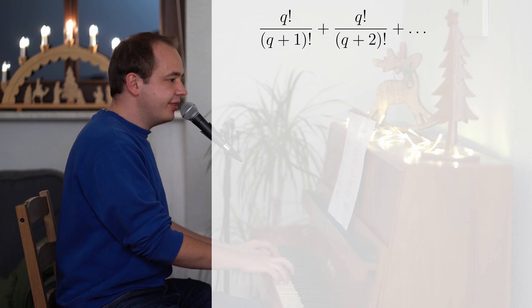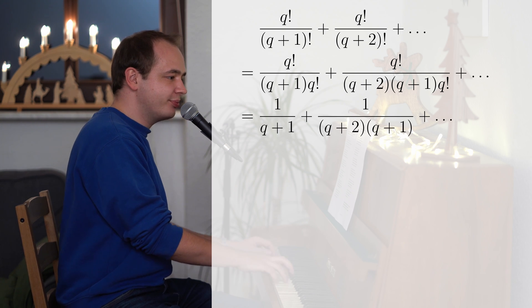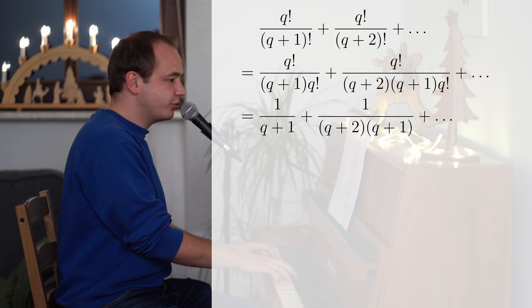And if we'd now take a look at the right hand side, we will again see factorials which we have to divide. Only this time the numerator factorial of q is contained in the denominator, which leaves you with 1 over a product. And there you can see this product just gets longer and longer.